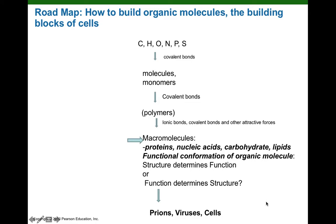Often from a simple molecule, say a monomer, we will use covalent bonds to link monomers together to form polymers. And then these polymers, through ionic bonds, covalent bonds, and other attractive forces, we'll be forming great big macromolecules. The big macromolecules we'll be describing are proteins, nucleic acids, carbohydrates, and lipids.